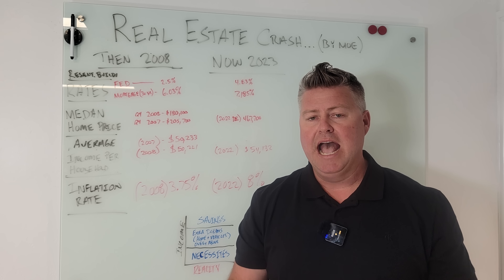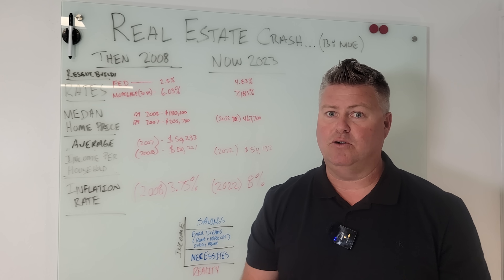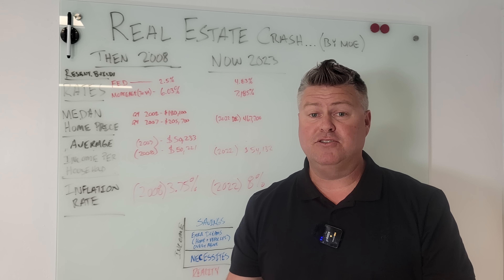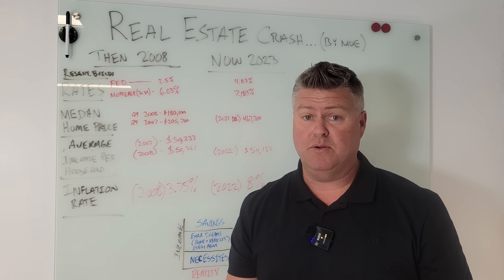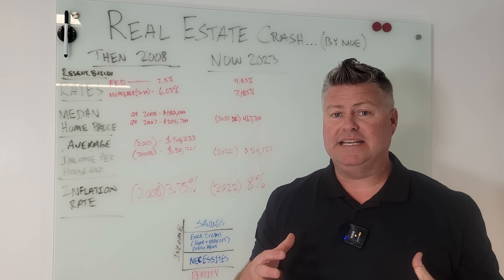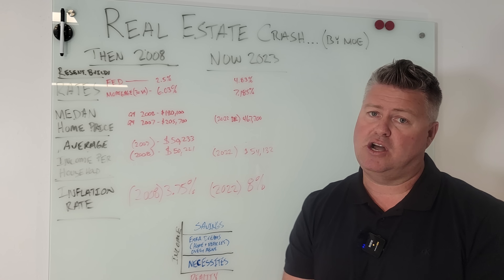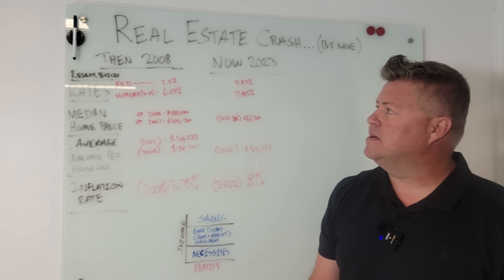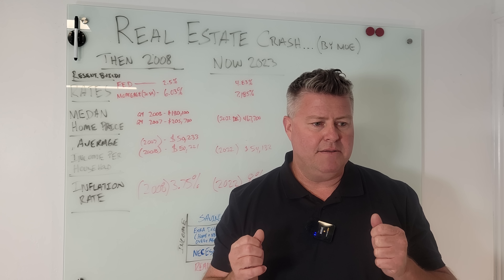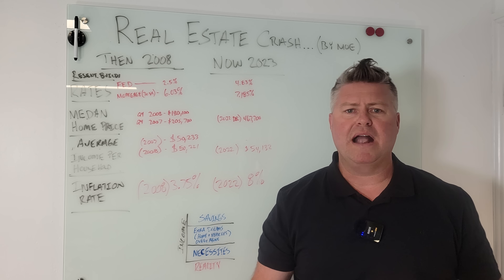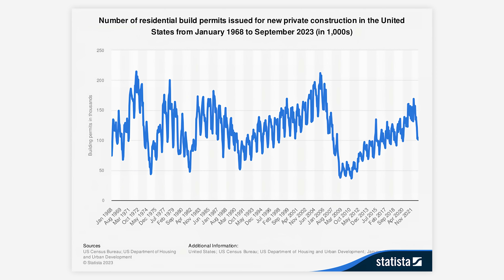I want to get you thinking differently about how to identify different cycles, whether it be the Federal Reserve interest rate cycle — whether we're going down or going up — and also where we are in the housing cycle itself, the price cycle. That's what we're gonna be talking about here. Let's dive right in and start with recent residential builds. Let's throw up a chart of residential builds and explain this.